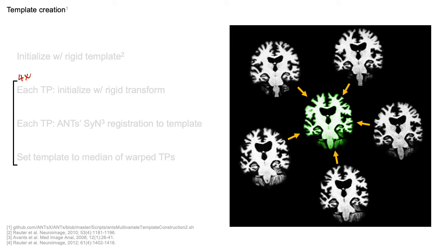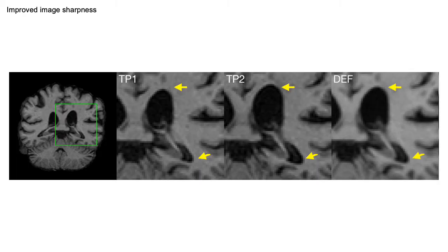For longitudinal processing, each time point is mapped to the common rigid space, just as in standard longitudinal FreeSurfer. Comparing the rigid and deformable templates in terms of image quality: going back to the subject with atrophy, using deformable registration produces a better quality template and removes the blurring that resulted from averaging voxels across tissue classes.